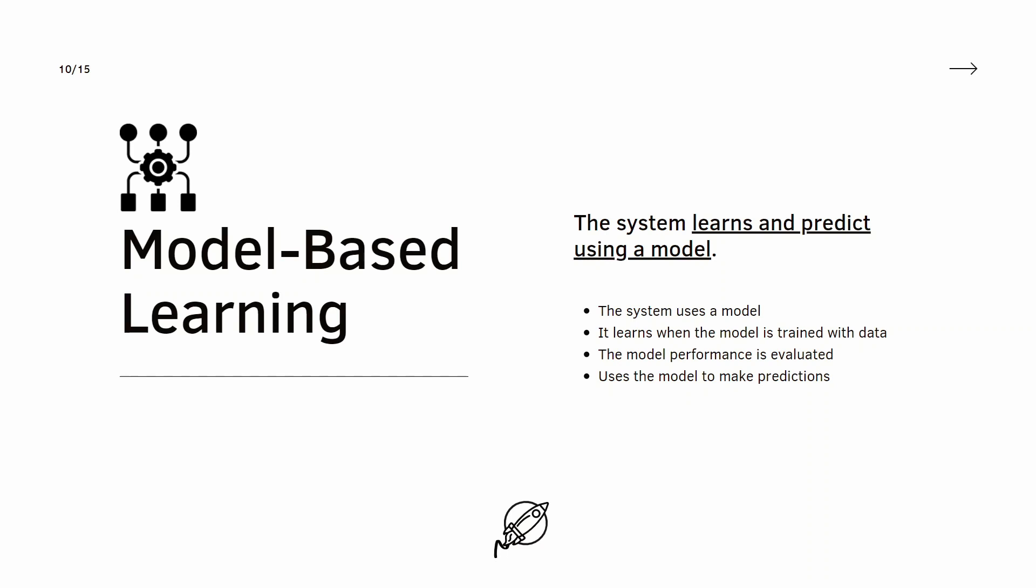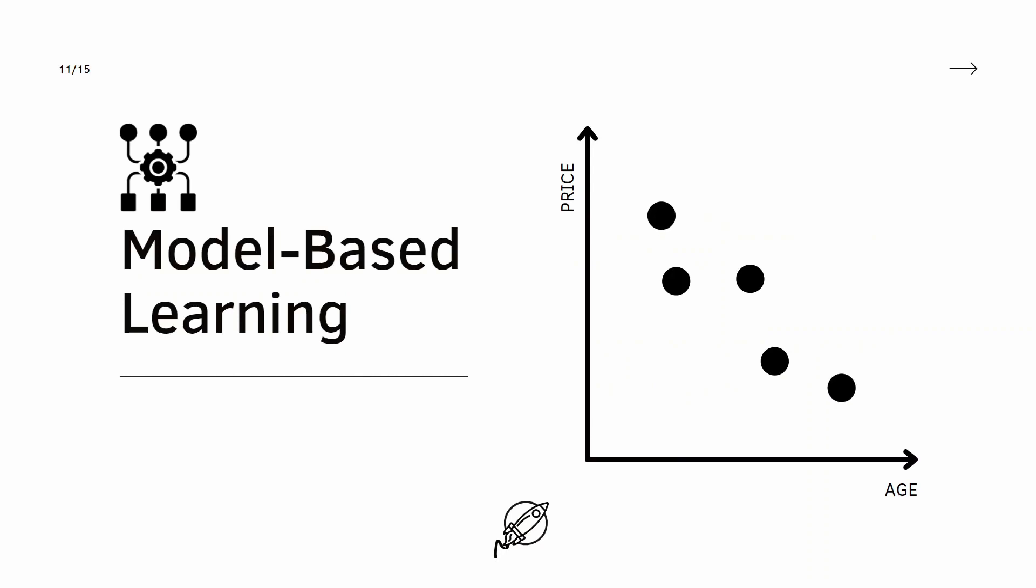Let's take a look at an example. Here we have several data points that represent cars with the age and the respective price. Now we will train the model that can be represented by this line. It learned with all this available data and now we want to predict the price of new cars.